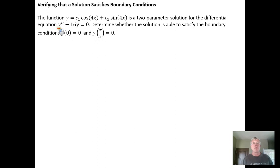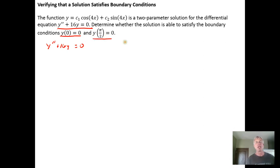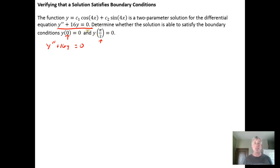I have a differential equation here: y double prime plus 16y equals zero. It's a boundary value problem because I've been given some boundary conditions. It's not an initial value problem because the inputs for x are not the same. If I had y of zero and y prime of zero, so that I was inputting x equals zero for each, I'd have an initial value problem. But here I have two distinct values being input for x, so it makes this a boundary value problem.